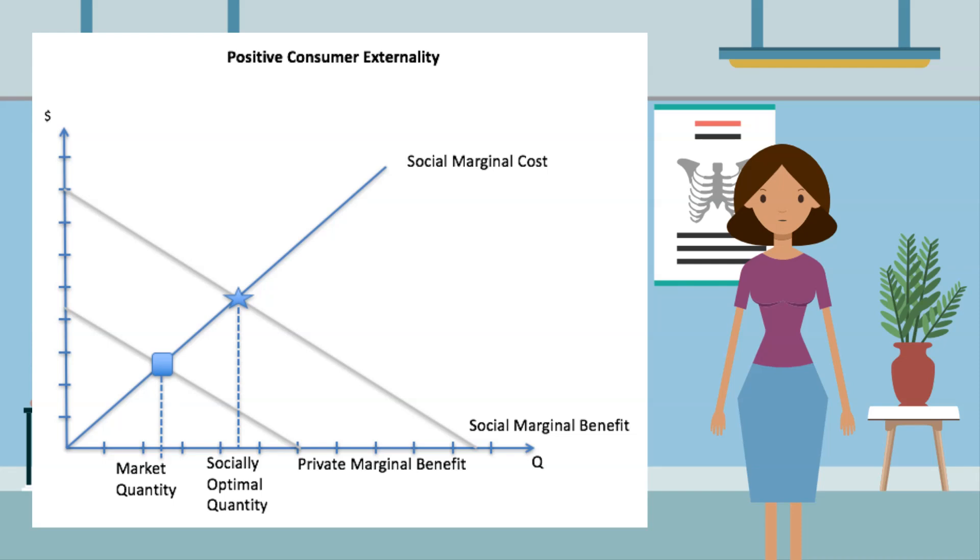Looking at it on a graph, we can see that the market is consuming too little of this good. In this case, we want more vaccinations to stop diseases. Government policies proposed to increase this could be to offer free vaccinations.